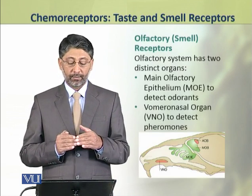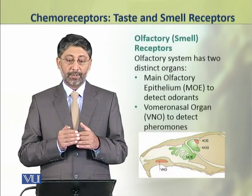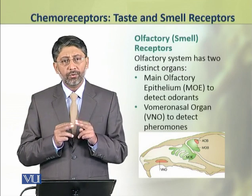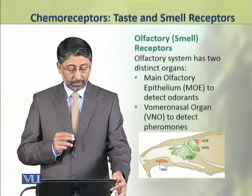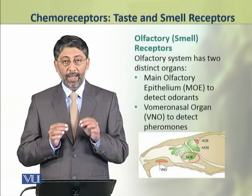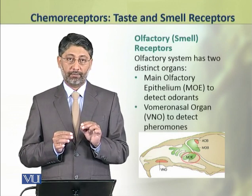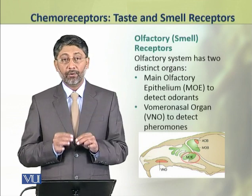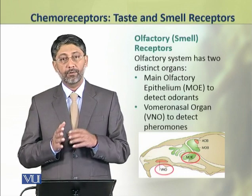The olfactory system of vertebrates contains two different types of organs. The first is called the main olfactory epithelium, which detects odorants. The second is called the vomeronasal organ, which detects pheromones.